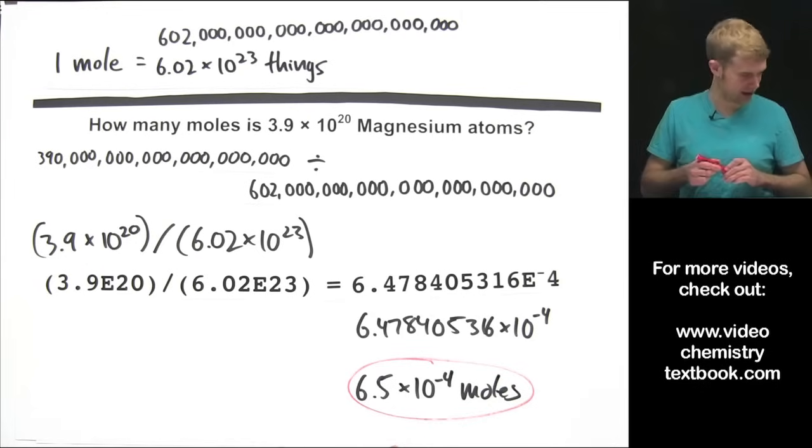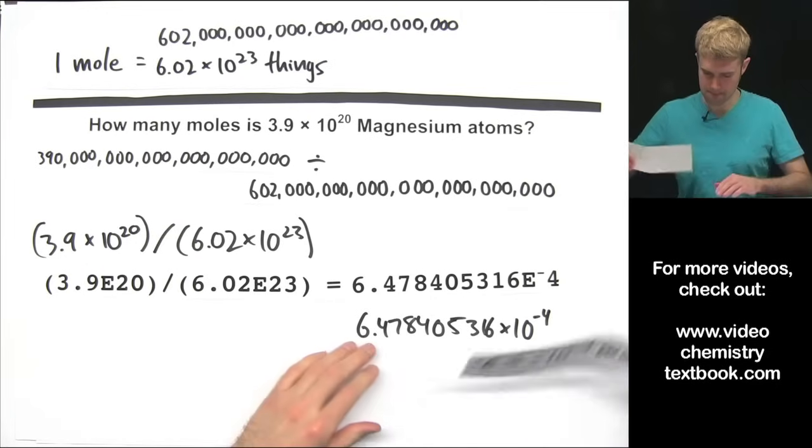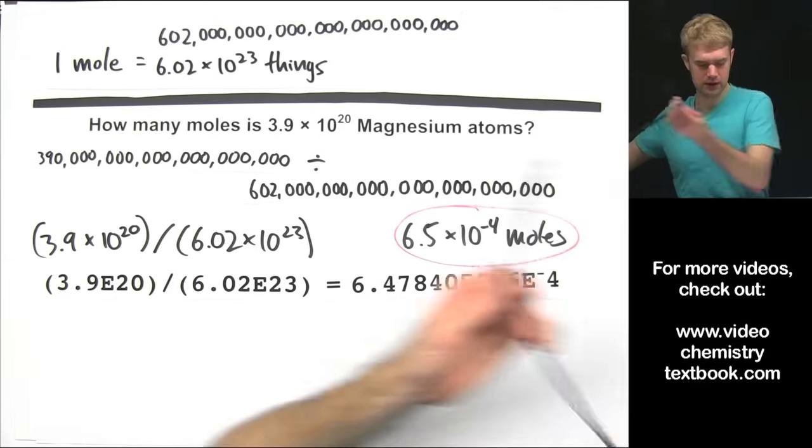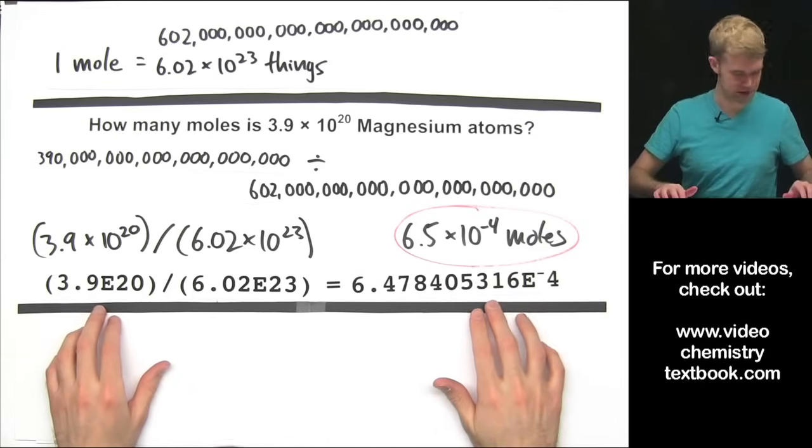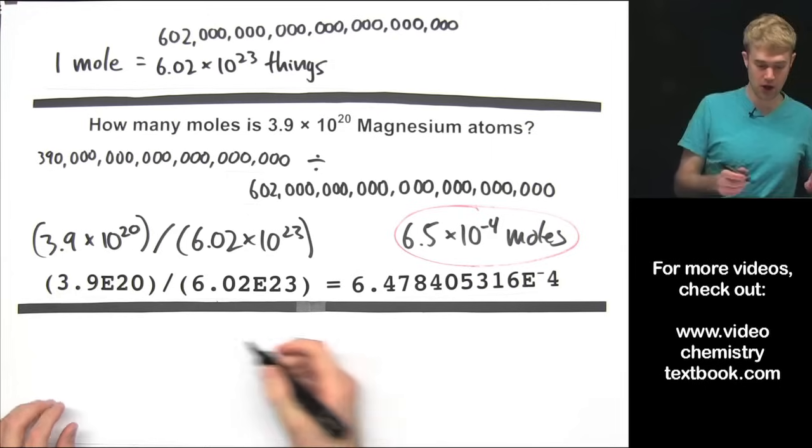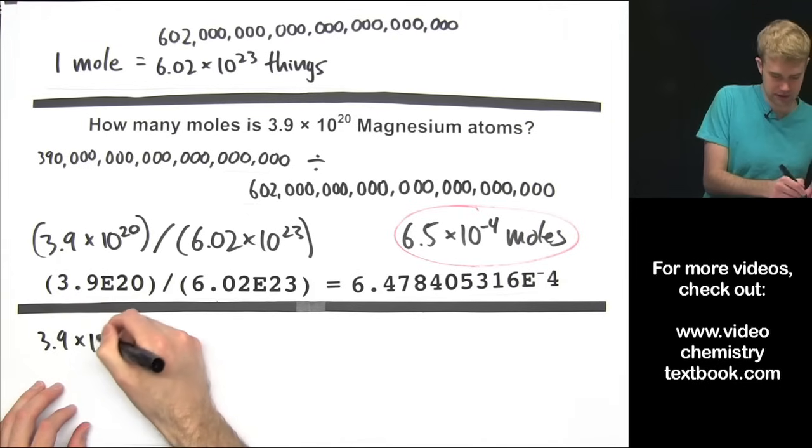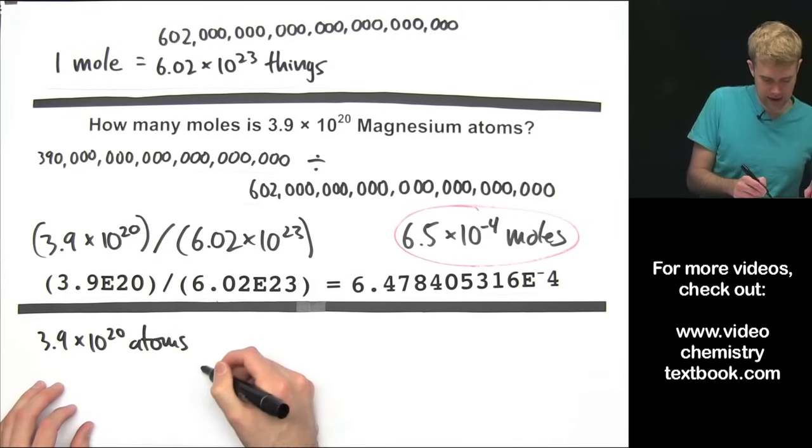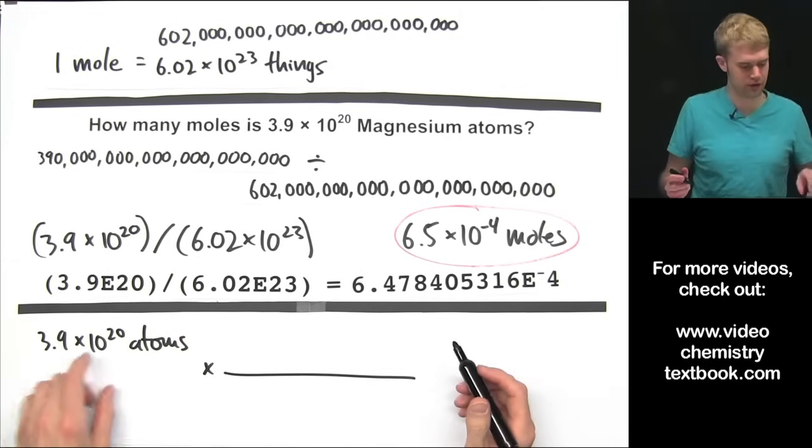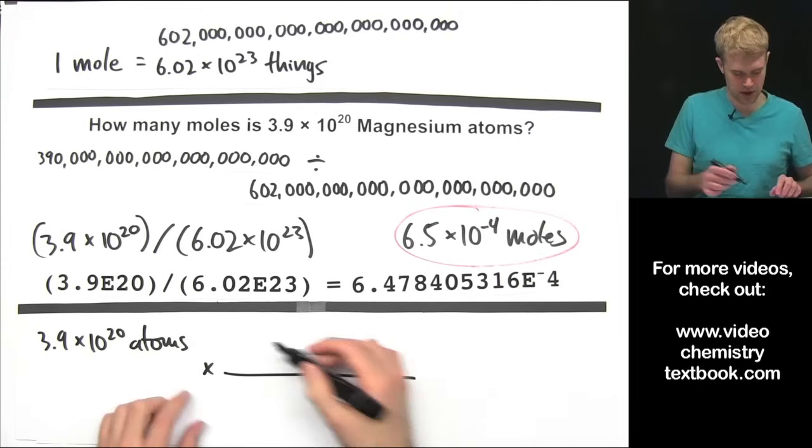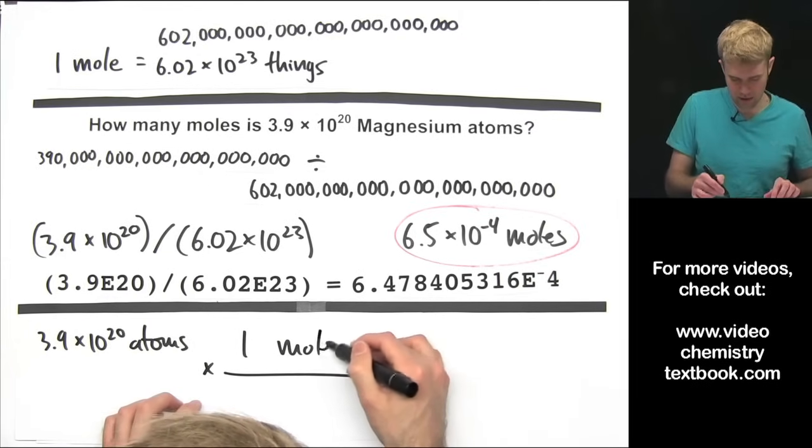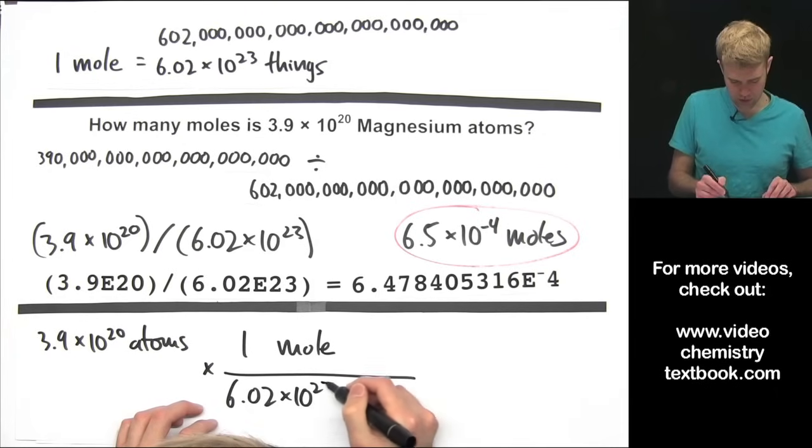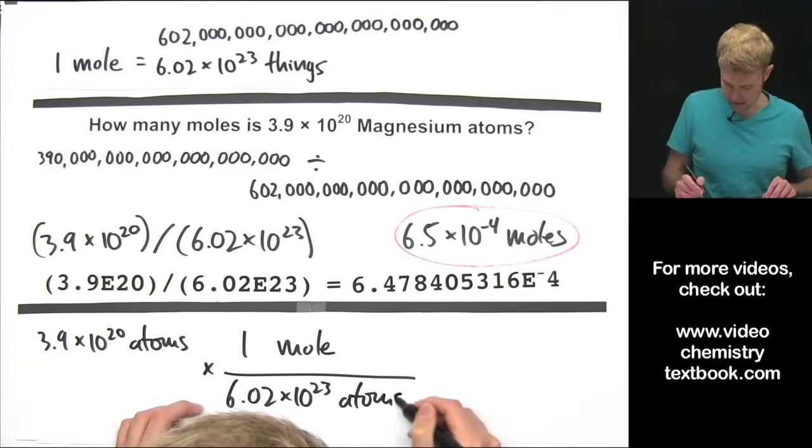That is our answer there, and here very quickly is how we would do this problem using conversion factors. We would start with 3.9 times 10 to the 20th atoms, and we would multiply that by a conversion factor that will get rid of atoms. So, 1 mole on top, 6.02 times 10 to the 23rd atoms down here.